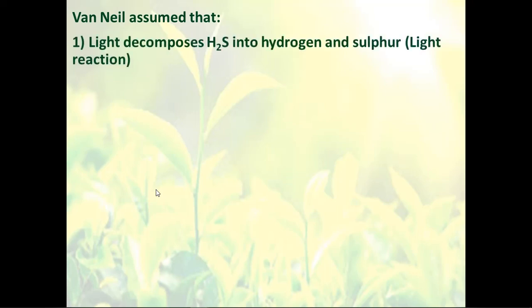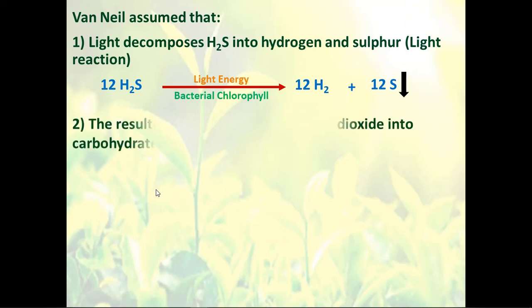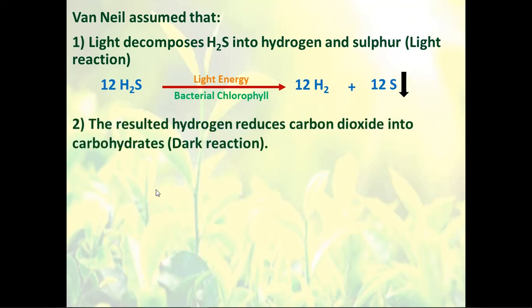Van Neel assumed that the light decomposes hydrogen sulfide into hydrogen and sulfur. And because light is the main factor affecting this reaction, he called it the light reaction. So we have hydrogen sulfide in the presence of light energy and bacterial chlorophyll — it splits into hydrogen and sulfur. Because sulfur is a solid substance, it precipitates. The resultant hydrogen was used to reduce carbon dioxide to produce carbohydrate, and this reaction doesn't require light, so he called it the dark reaction.